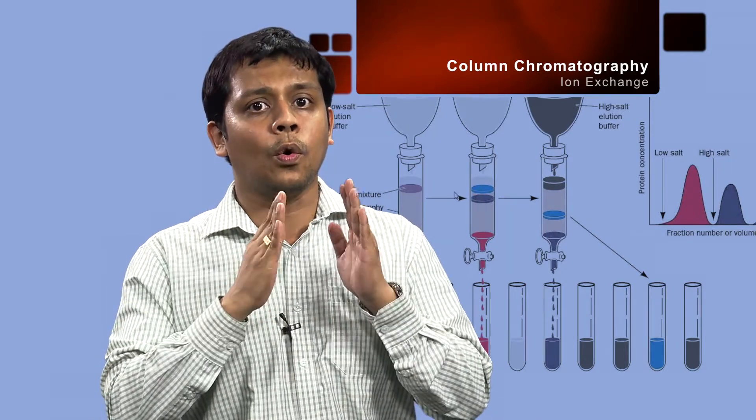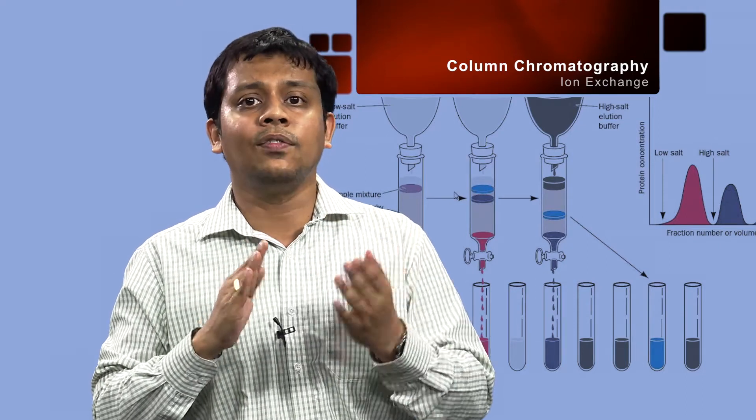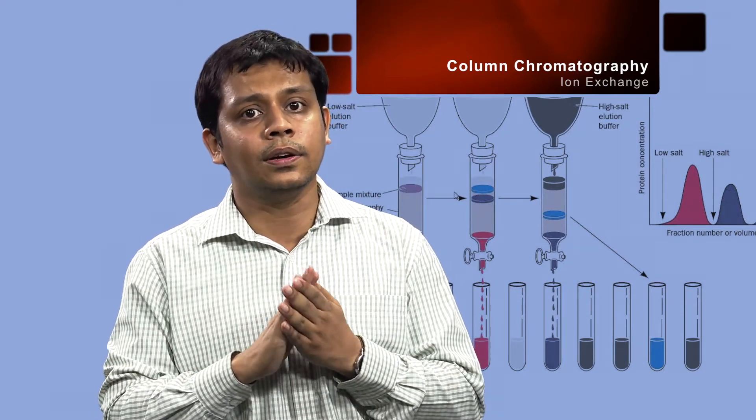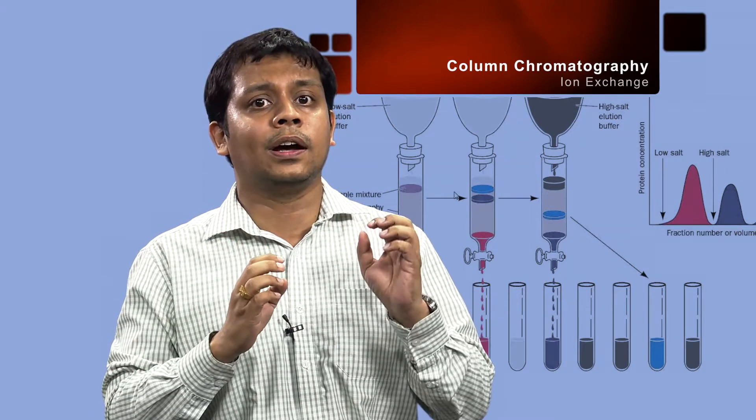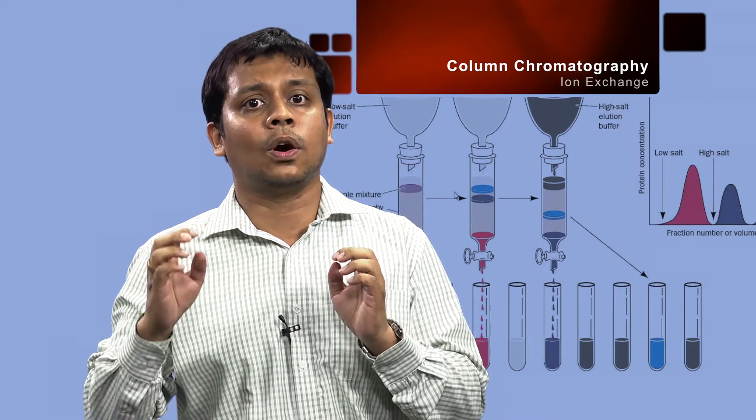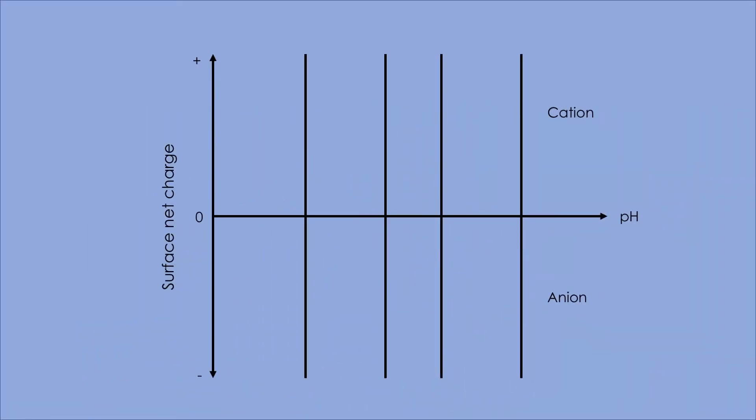Each protein has its own unique net charge versus pH relationship, which can be visualized as a titration curve. This curve reflects how the overall net charge of the protein changes according to the pH of the surrounding. This figure illustrates several theoretical protein titration curves.